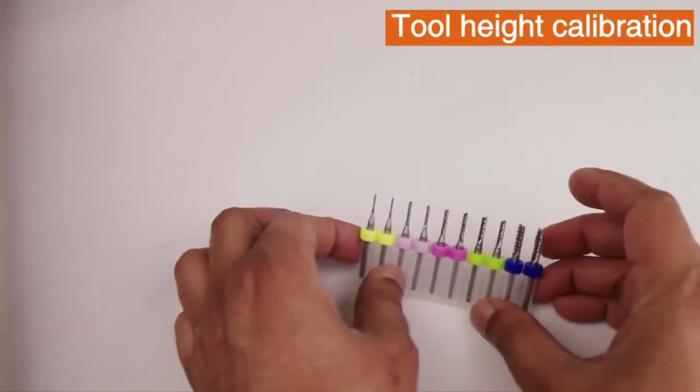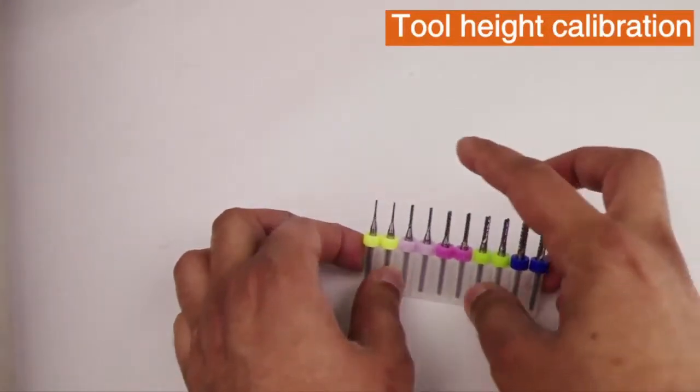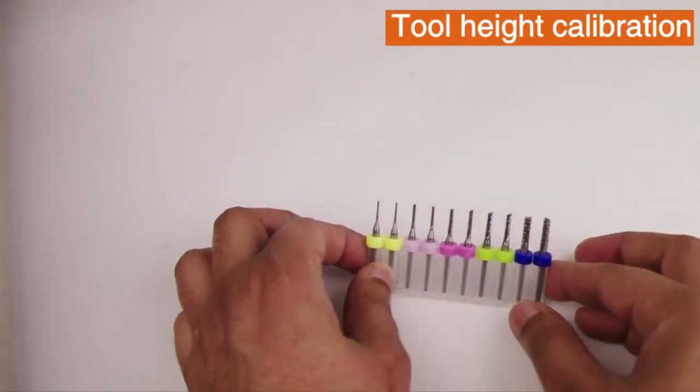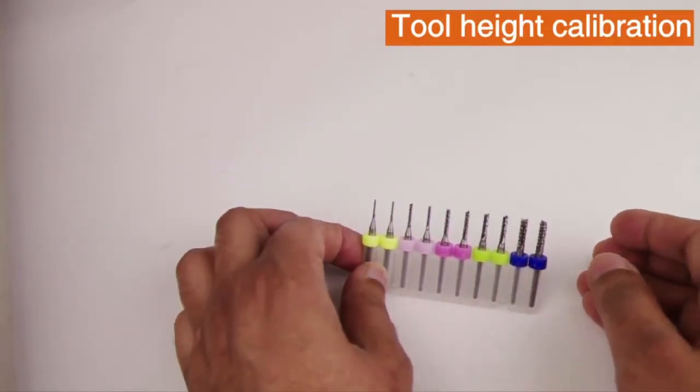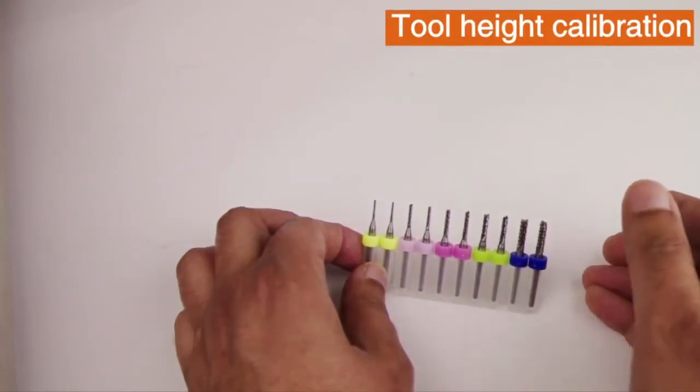In past videos we've covered how to calibrate your tools automatically using the automatic tool height calibration feature built into the Masso. But today we're going to talk about calibrating the tool height manually.